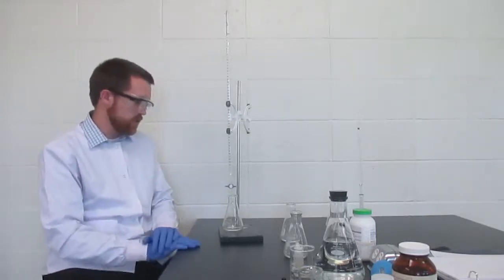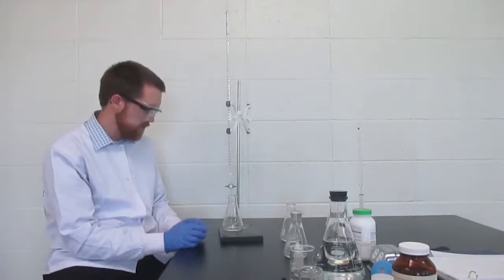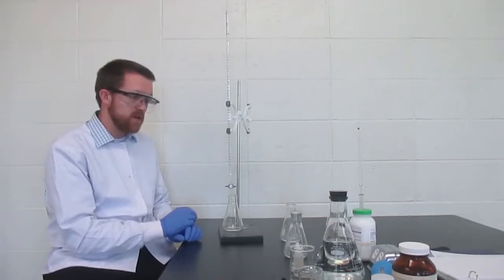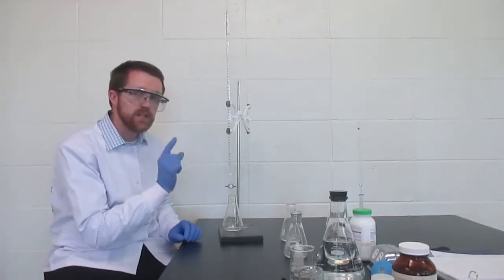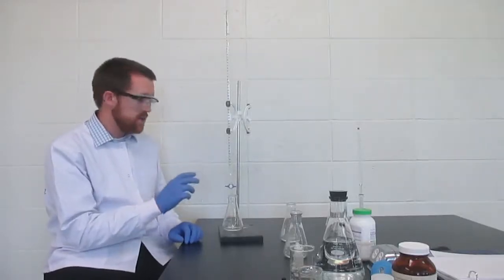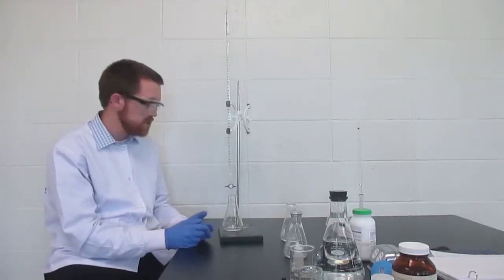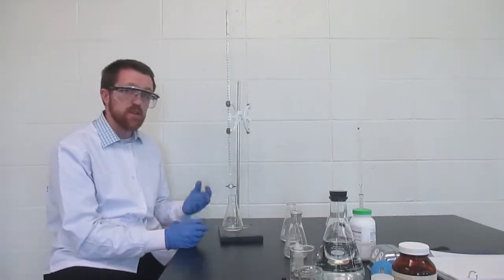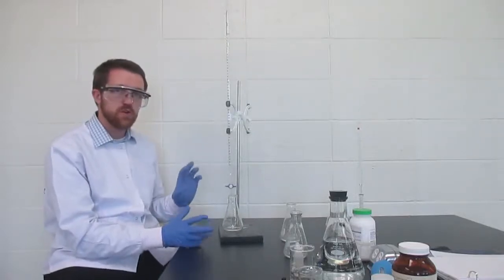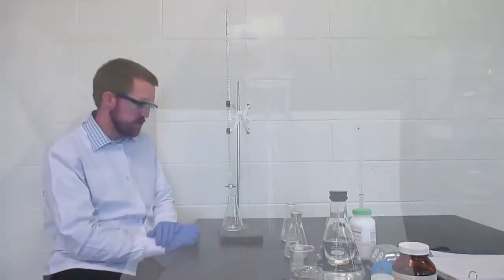So let's start titrating. We're going to let some of the titrant into the sample. We'll be able to see a color change happen, and we'll be able to swirl that away for a while. And what we're looking for is the exact one drop that turns it a color that's permanent, that we can't swirl away. That indicates to us that we've reached the end point, the point that we can see a visible change. And hopefully that's very close to the equivalence point, that theoretical point where there's an equal amount that has reacted of each, where there's sort of no limiting reagent.